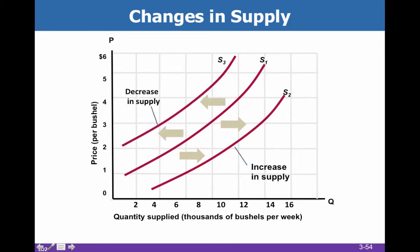A change in supply is where you have a shift of an entire curve. An increase looks like a rightward shift, and a decrease looks like a leftward shift. Please do not say that supply goes up — say that supply increases or shifts to the right. We can't say supply goes up because S2, which reflects an increase in supply, looks graphically below S1, and that gets guys very confused. So we have decreases in supply which look like leftward shifts, and increases in supply which look like rightward shifts.